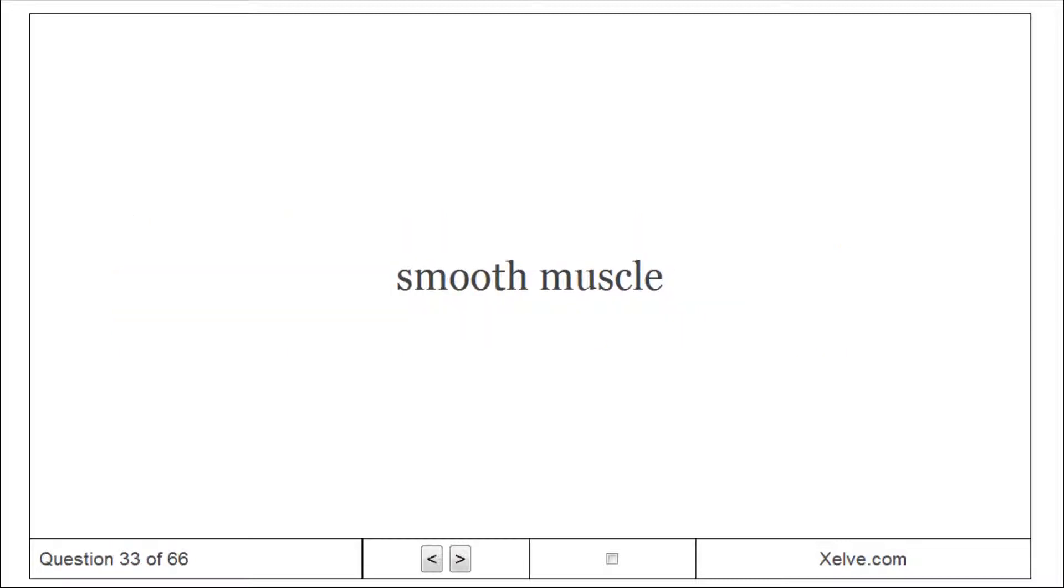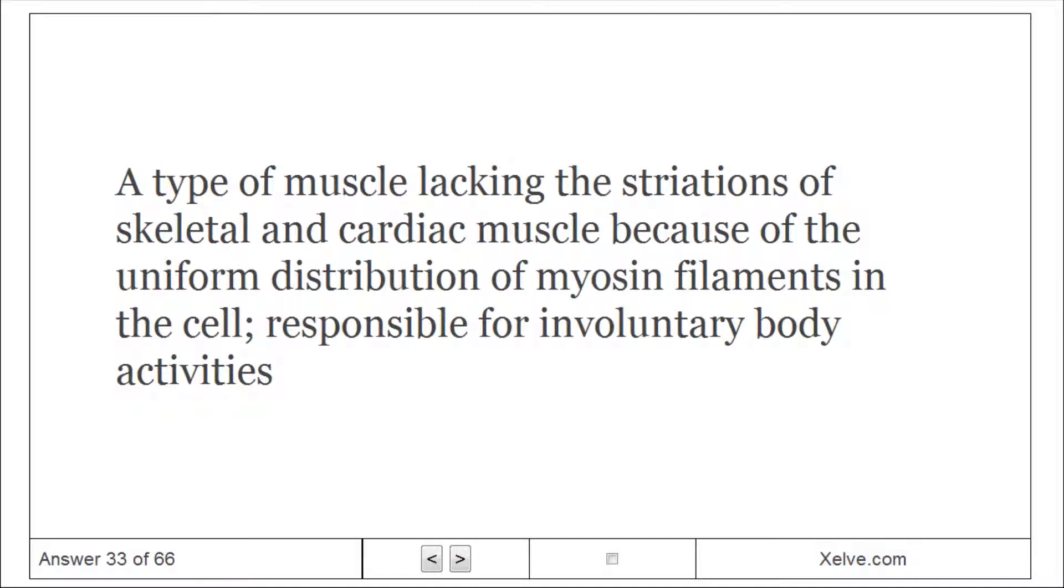Smooth muscle: A type of muscle lacking the striations of skeletal and cardiac muscle because of the uniform distribution of myosin filaments in the cell, responsible for involuntary body activities.